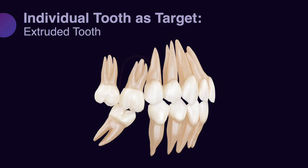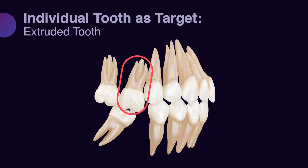Sometimes teeth vertically have a major problem — a tooth that is significantly extruded or a tooth that requires significant extrusion. Both these conditions also need to be recognized early enough so that we plan properly and do not cause side effects on adjacent teeth.